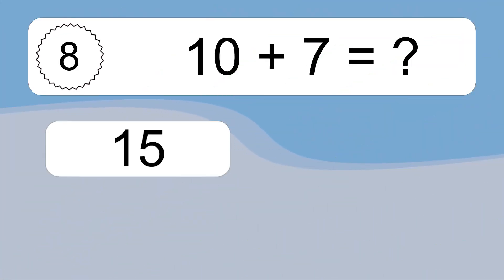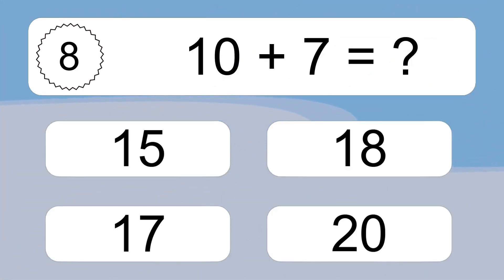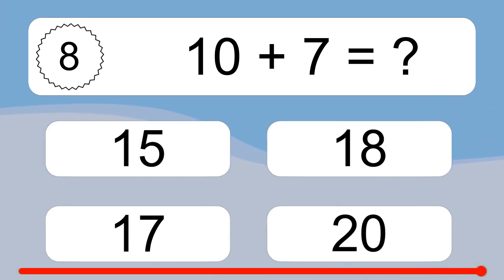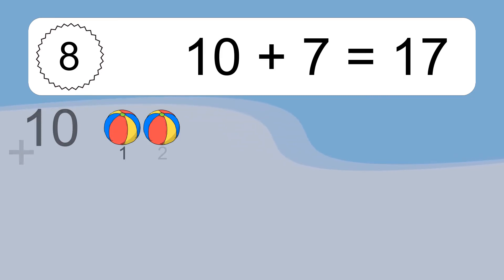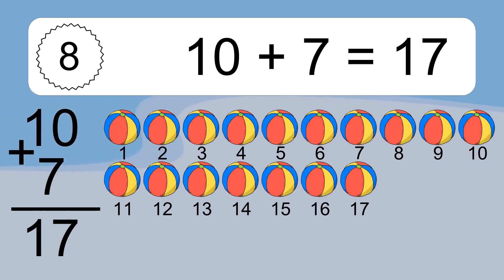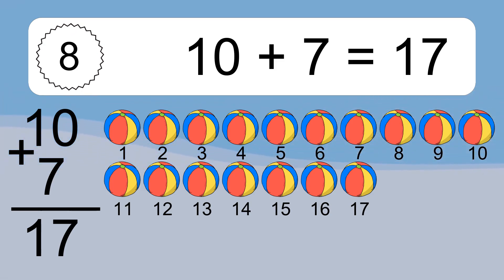Ten plus seven equals what? Ten plus seven equals seventeen. Let's count it: one, two, three, four, five, six, seven, eight, nine, ten, eleven, twelve, thirteen, fourteen, fifteen, sixteen, seventeen.